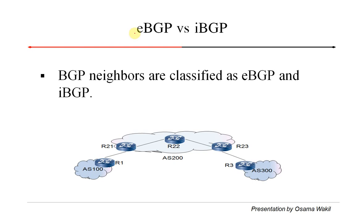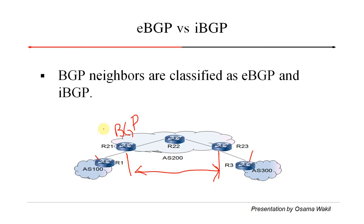There are two types of BGP: eBGP and iBGP. If we consider a topology, we run BGP on the border routers. Whenever BGP is running within the same autonomous system — such as between routers of AS200 — we call it iBGP, or Interior Border Gateway Protocol. Whenever it is run between border routers of two different autonomous systems, we call it eBGP, or Exterior Border Gateway Protocol.